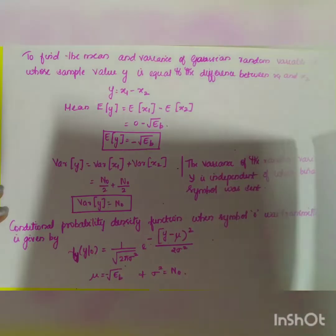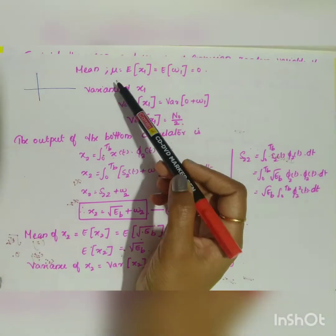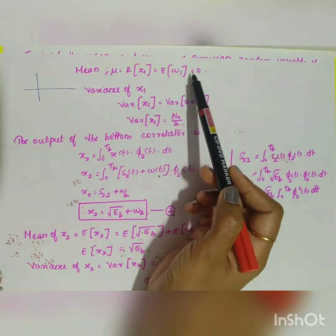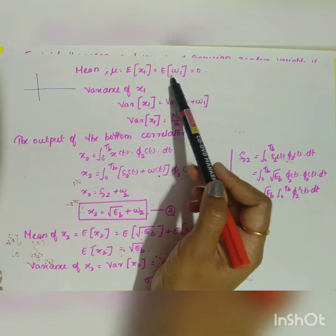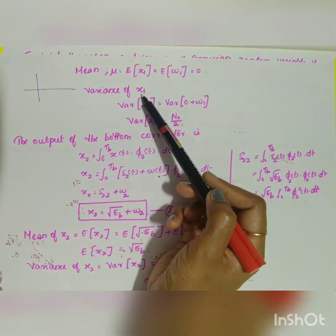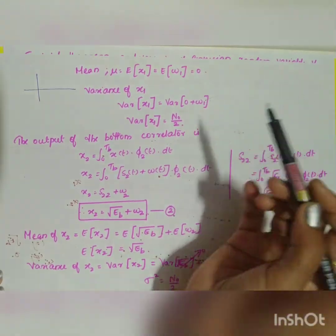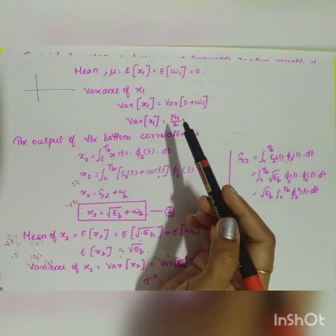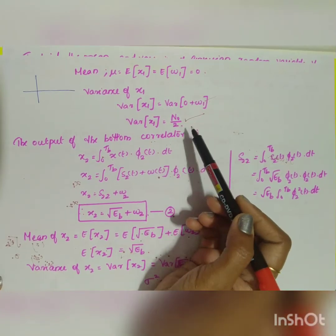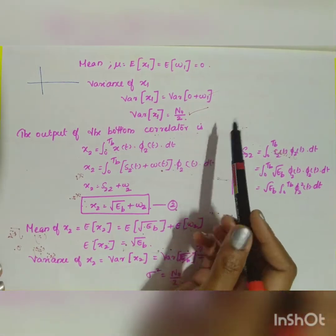The mean of x1 is E[x1] = 0, since the noise mean is 0. The variance of x1 equals the variance of w1, which is N₀/2.